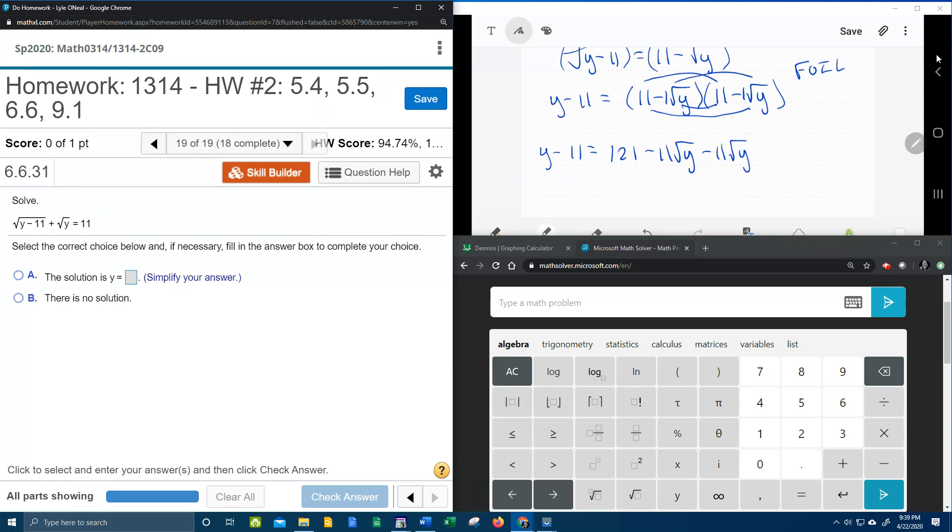And then last but not least, I've got negative 1 times negative 1, which makes a positive 1. The square root of y times the square root of y is the square root of y squared. Remember, anything times itself is that thing squared, but remember a square and a square root cancel. So really, that's going to just be y.